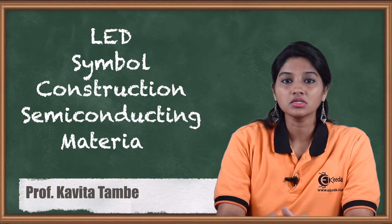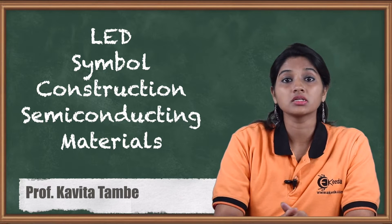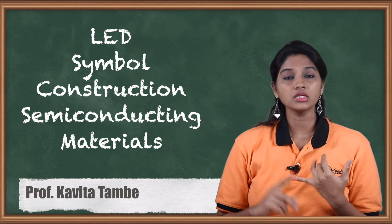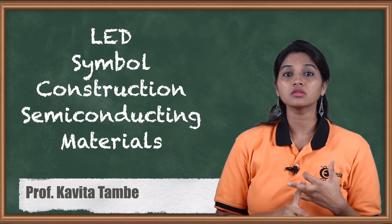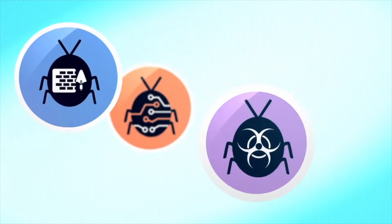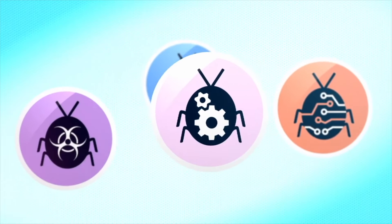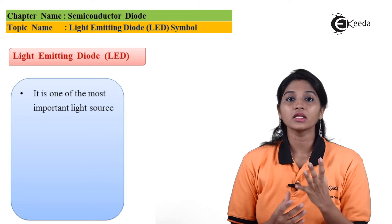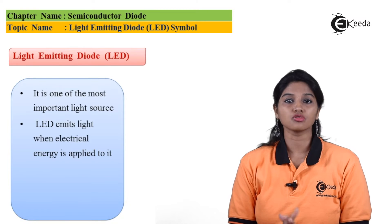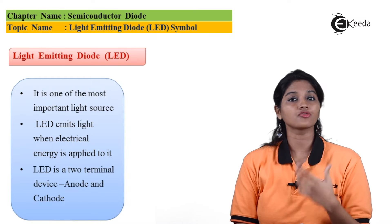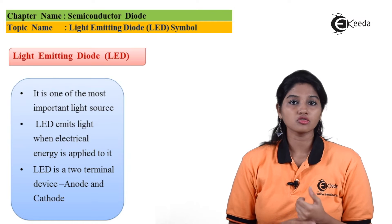Hello friends. Today we are going to see another semiconducting device — the light emitting diode, nothing but LED. In this video we are going to see what is LED, how it is constructed, and what are the different semiconducting materials used for its construction. LED, that is light emitting diode, is one of the most important sources of light. As its name indicates, it emits light whenever we apply an electrical signal to its terminals.